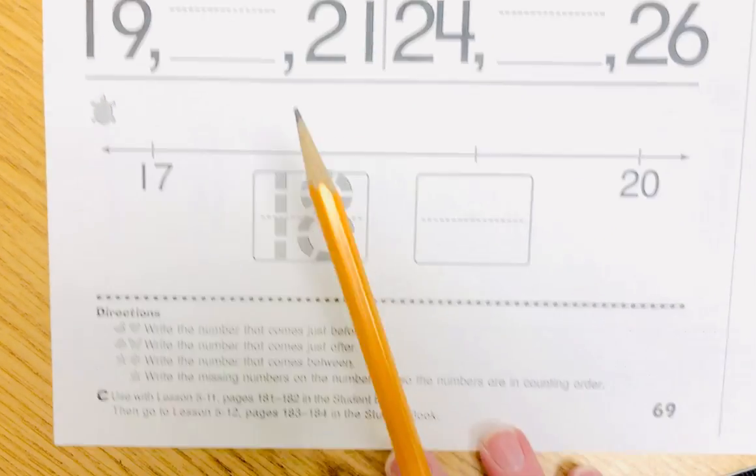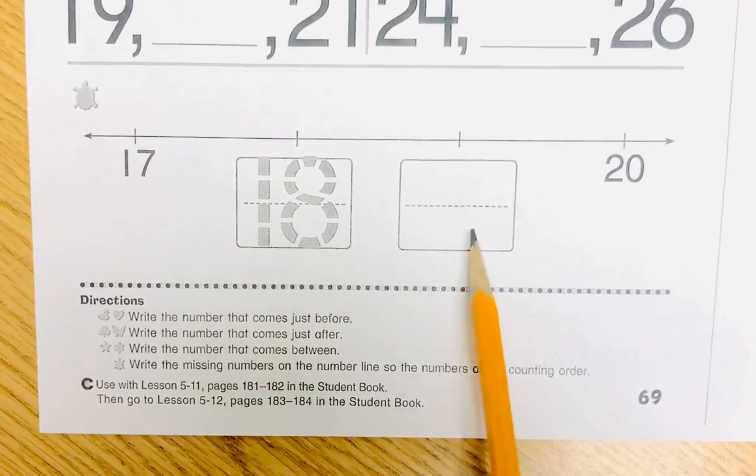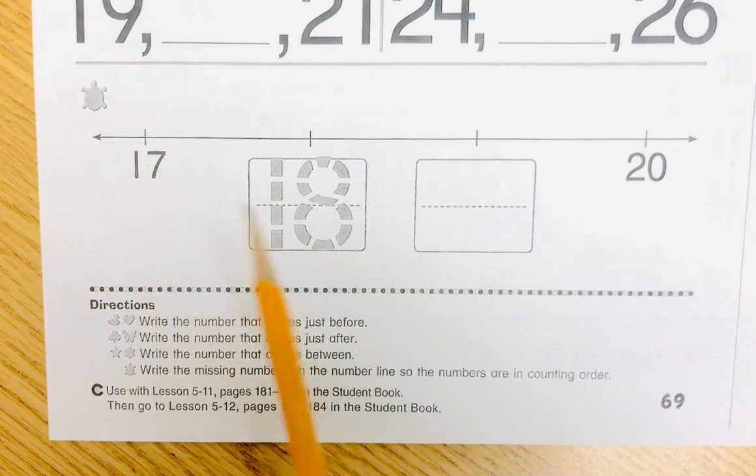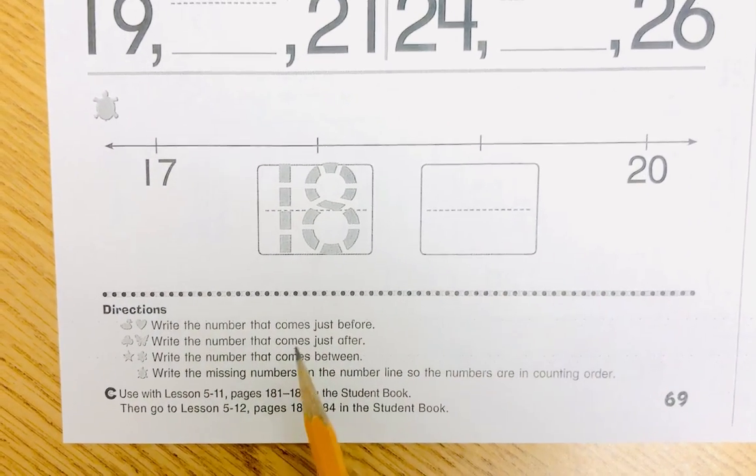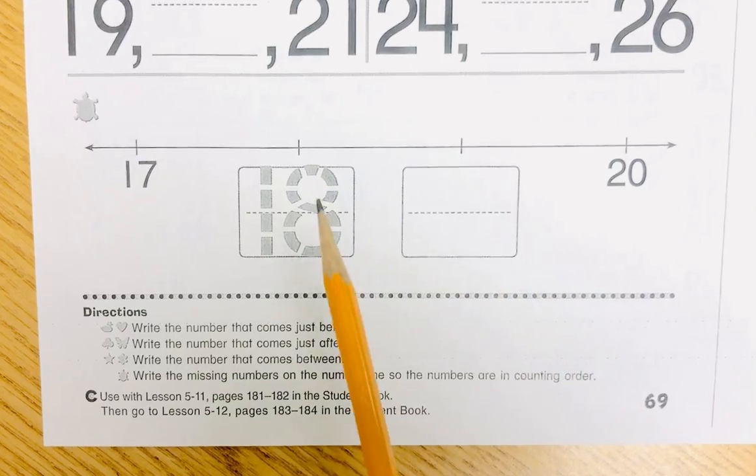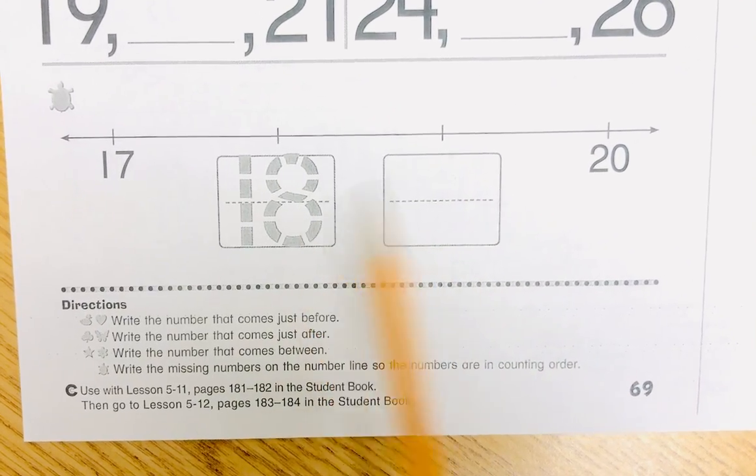And then in the turtle row, just complete the number line. So 17, 18, 20. Or in other words, what number comes in between 18 and 20?